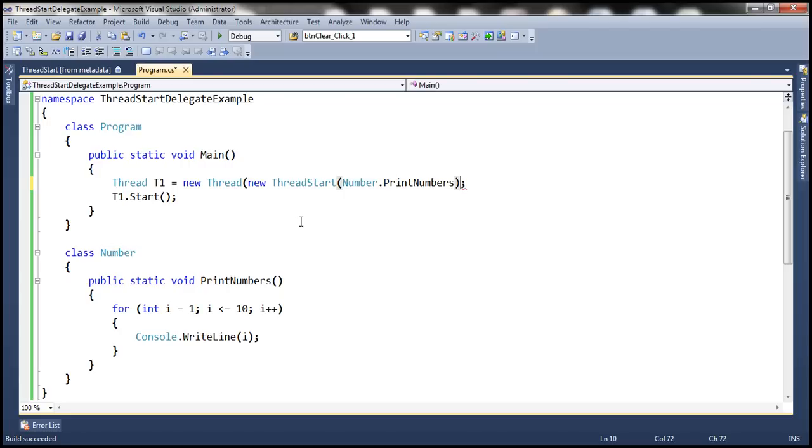Now what is a delegate? A delegate is a type-safe function pointer. Why do we call a delegate as type-safe function pointer? That is because the signature of the function to which the delegate points to should match the signature of the delegate. Otherwise, we'll have a compiler error. That's why delegates are called as type-safe function pointers.